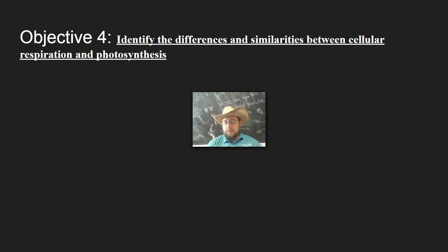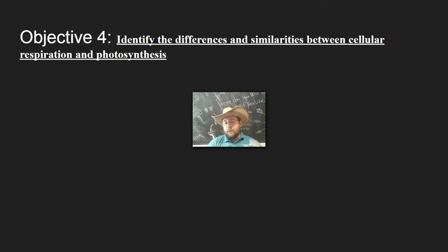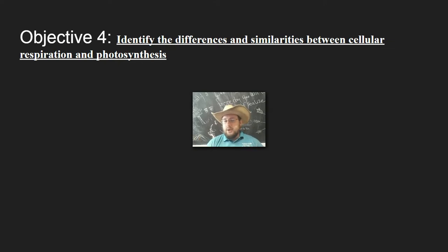99.9% of life on Earth relies on the sunlight that is captured by photosynthesis in order to power the process of making food, which plants, animals, and every organism in the food web then uses through cellular respiration — breaking that down to make the energy that it actually needs to power its life.